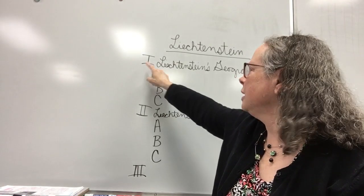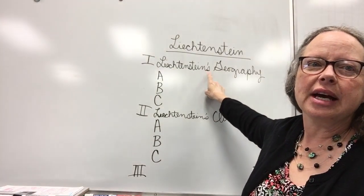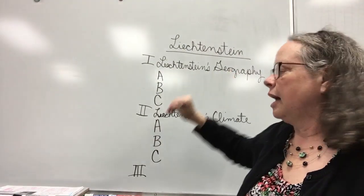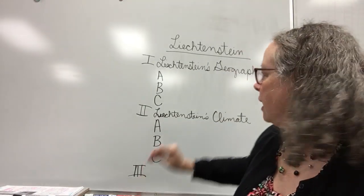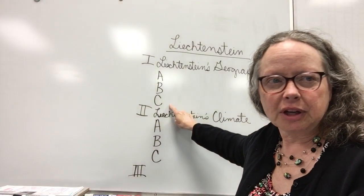After that Roman numeral one, that is where you put the name of your country apostrophe s and its geography. Then you're going to get your geography cards and you're going to write down each item about the geography of that country.